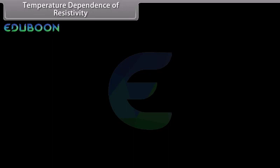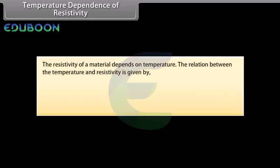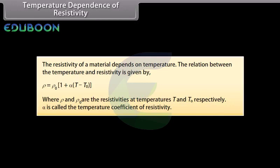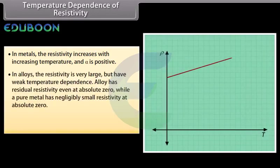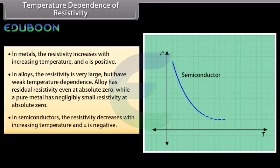Temperature dependence of resistivity: The resistivity of a material depends on temperature. The relation is ρ = ρ₀[1 + α(T − T₀)], where ρ and ρ₀ are the resistivities at temperatures T and T₀ respectively, and α is the temperature coefficient of resistivity. In metals, resistivity increases with increasing temperature and α is positive. In alloys, resistivity is large but has weak temperature dependence, with residual resistivity even at absolute zero. In semiconductors, resistivity decreases with increasing temperature and α is negative.